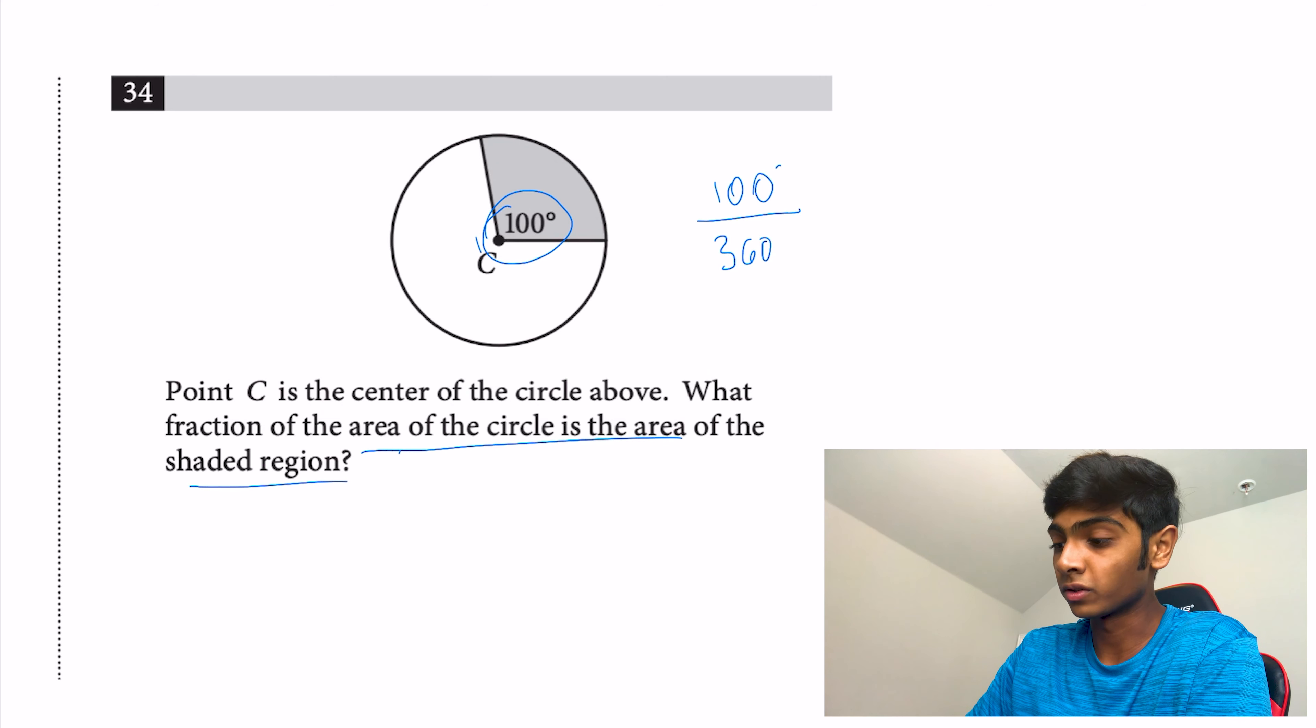We just cross out those zeros to begin with, and we're left with 10/36, and then divide by 2, and we get 5/18. That's our answer.